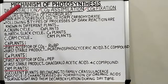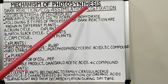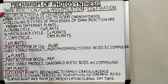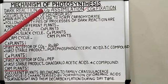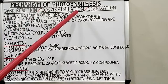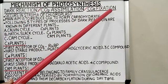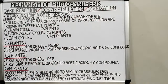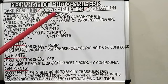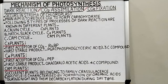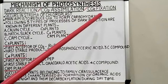Hello students. To continue with the mechanism of photosynthesis, today we will discuss the dark reaction. Dark reaction is the second phase of photosynthesis which is independent of light. Dark reaction is also known as CO2 assimilation, CO2 fixation, or carbon reaction. Dark reaction takes place in the stroma of the chloroplast. The main aim of dark reaction is to reduce carbon dioxide to form carbohydrates.